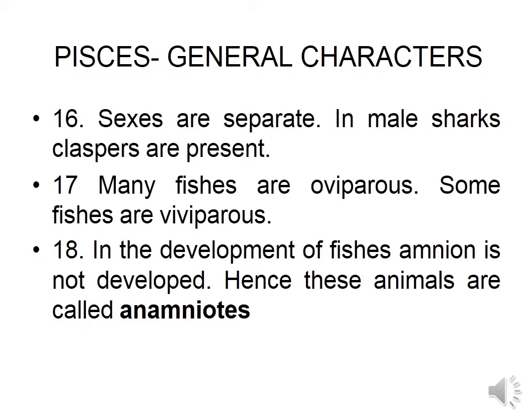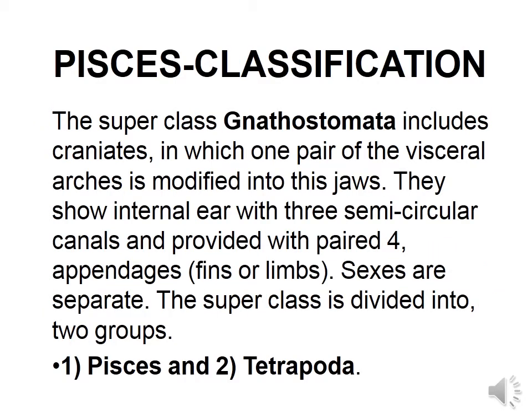These are the general characters of Pisces. Pisces is further classified. The division Gnathostomata includes craniates in which one pair of visceral arch is modified into jaws. They show internal ear with three semicircular canals and are provided with paired appendages — either fins or limbs. Gnathostomata is divided into two superclasses: superclass Pisces and superclass Tetrapoda.